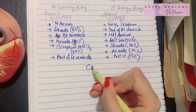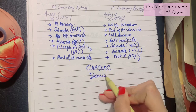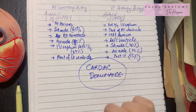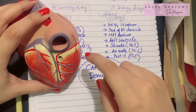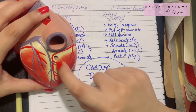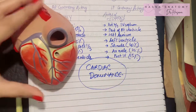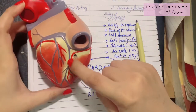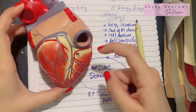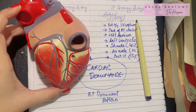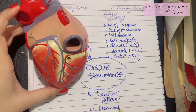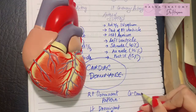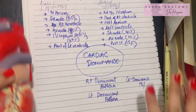Now let's discuss cardiac dominance. Cardiac dominance is determined by which artery supplies the posterior interventricular groove. In 67% of cases the posterior interventricular branch is given by the right coronary artery, so the heart is said to have a right dominant pattern. In 15% of cases the left coronary artery supplies the posterior interventricular groove and the right ends before it — in that case the heart has a left dominant pattern. When both coronary arteries supply the heart equally, it is known as co-dominance, which occurs in 18% of cases.